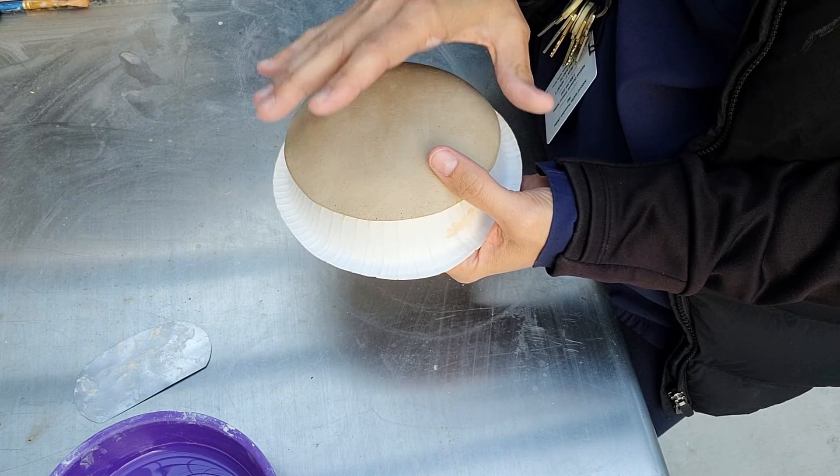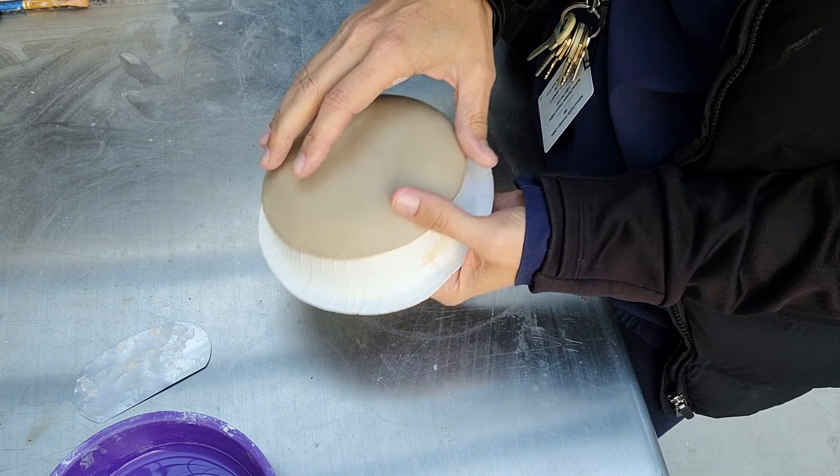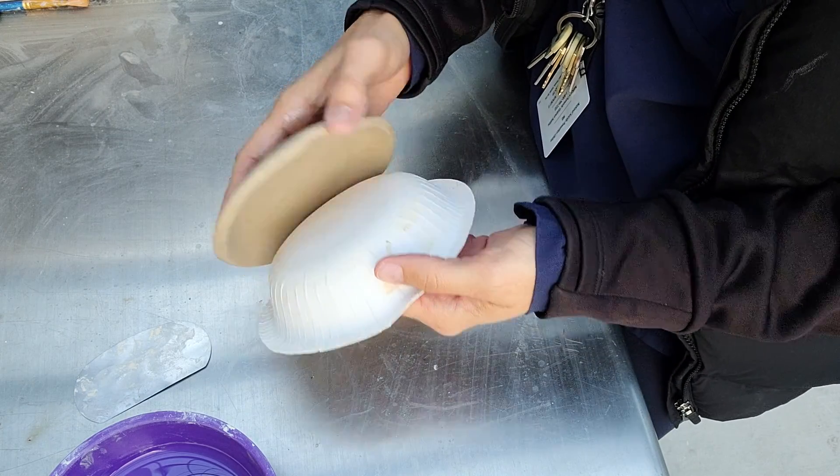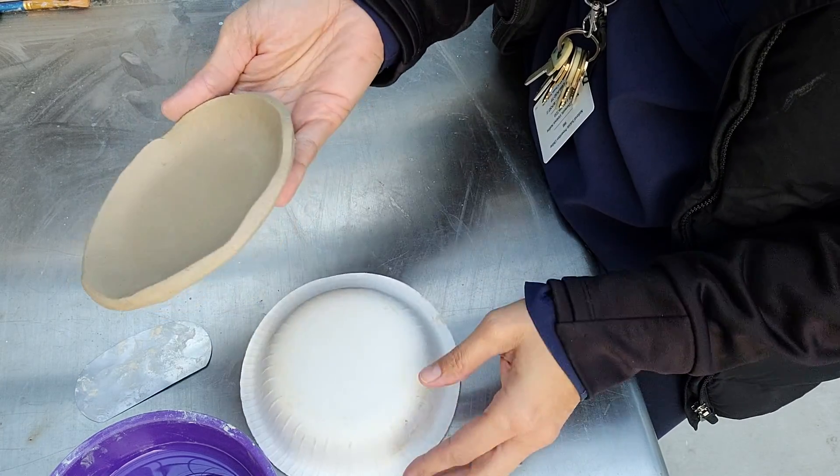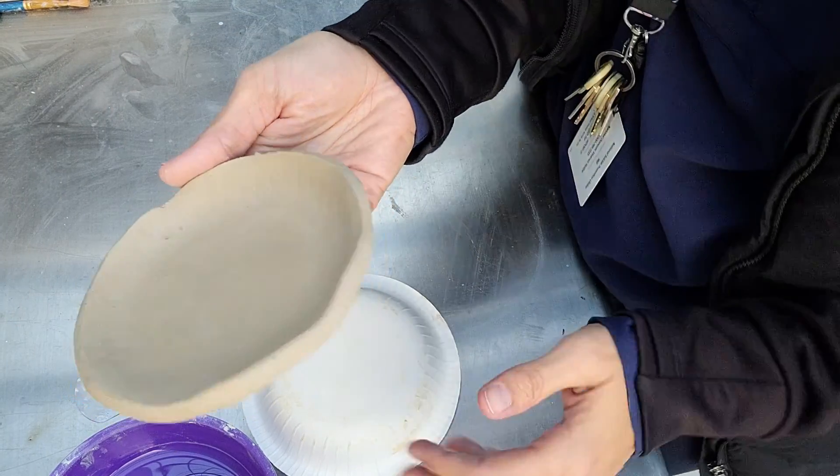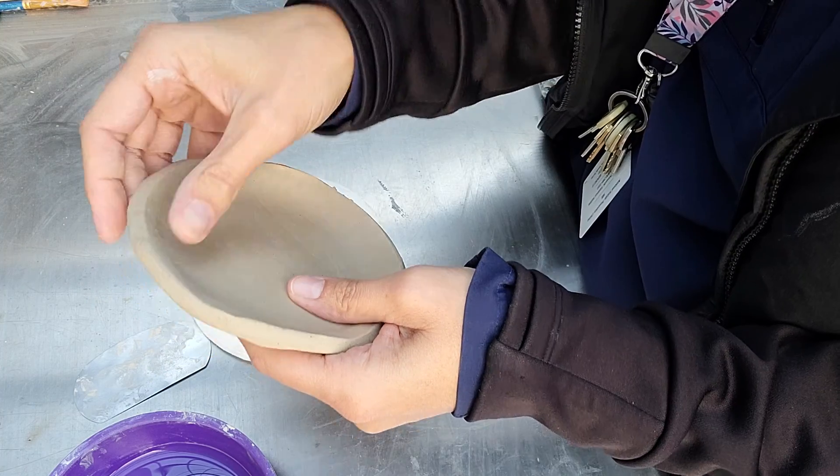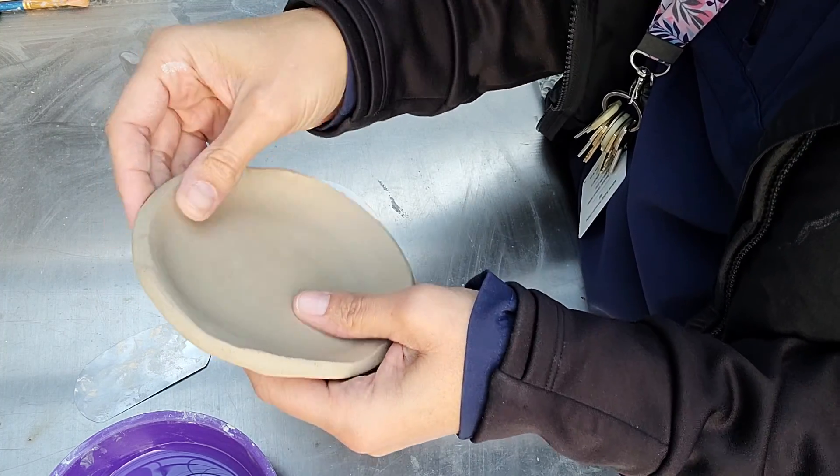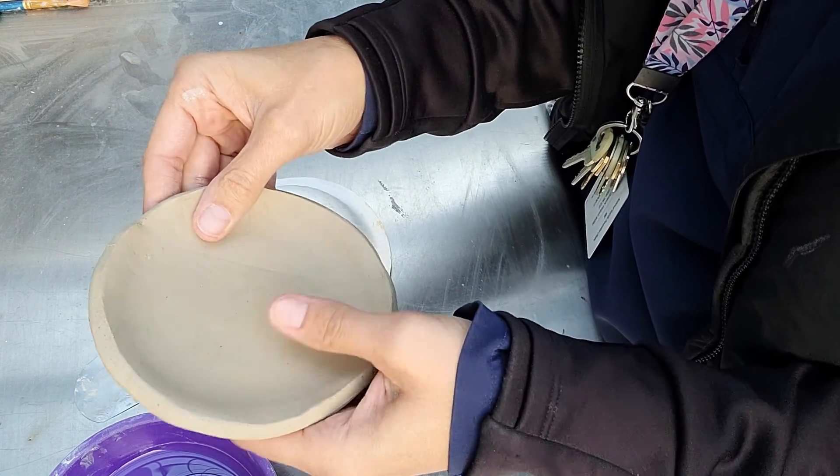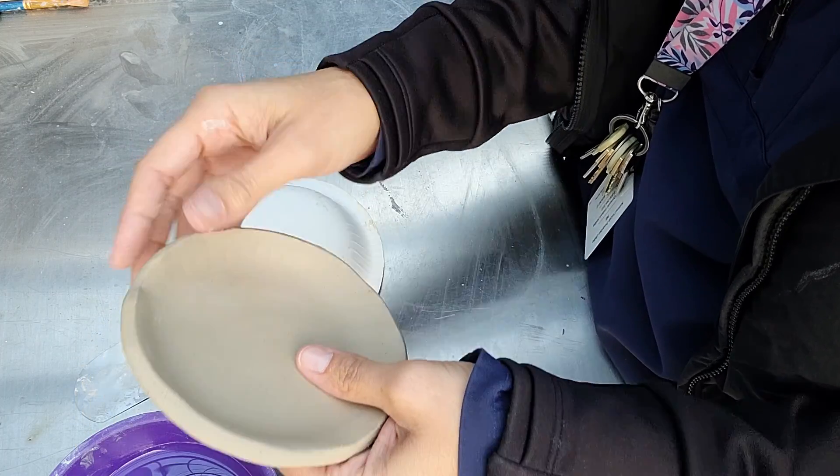When you remove it, it has taken on the shape of the outside of this bowl. Now, if your project is still too soft, you'll want to wait. You might even need to put it outside for a couple minutes and let it lose a little bit of its moisture, because it should be in that soft leather-hard stage.